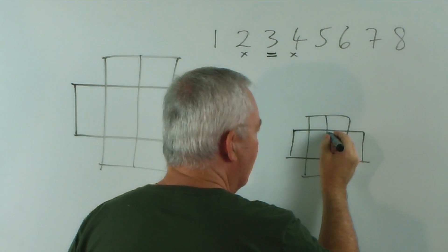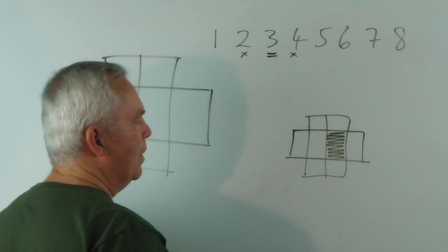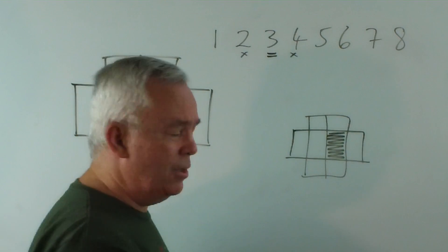But here's the question. If I put a number in this square, then what squares are excluded to me?